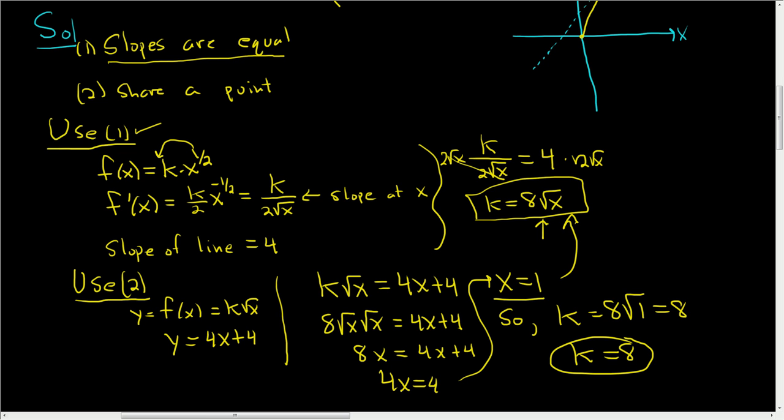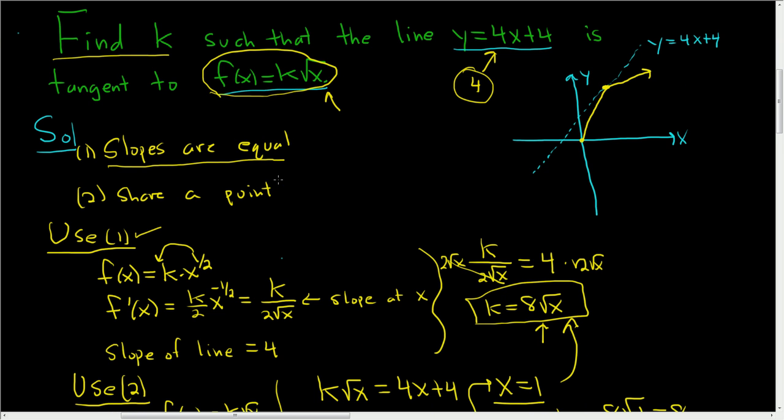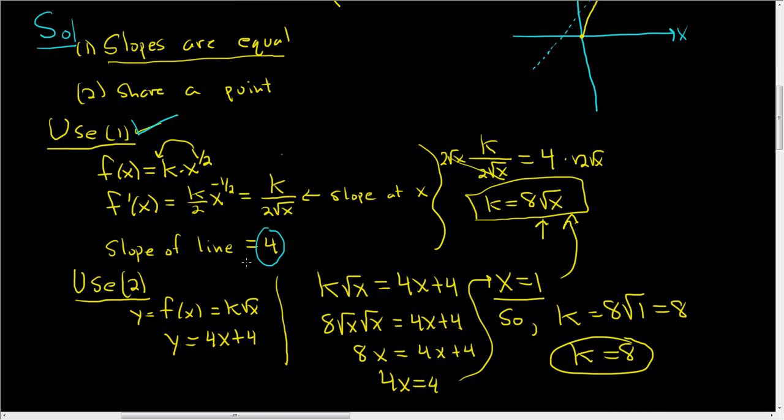So the problem kind of works itself out as you go through it. The first time I did this problem, I drew a picture. And I realized that the slopes must be the same and they share a point. So we use condition 1 first. We took the derivative and set it equal to 4. And then we set the y values equal to each other to finish. You could have used condition 2 first, and then used condition 1. It still works, but I think it's a little bit easier if you first work with the fact that these slopes are equal. I hope this helps.